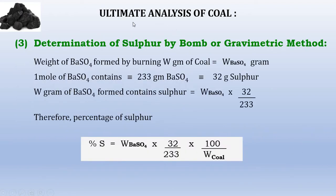In the ultimate analysis, sulfur is determined by the bomb method. In this method, the acid extract is treated with barium chloride to get a barium sulfate precipitate. The barium sulfate precipitate is filtered through a Whatman filter paper, then dried, ignited and weighed. One mole of barium sulfate contains 233 grams — that is the formula weight of BaSO₄: barium 137, plus sulfur 32, plus oxygen 16 × 4.